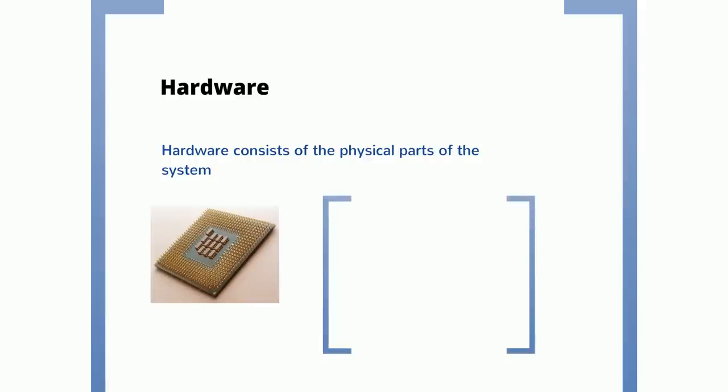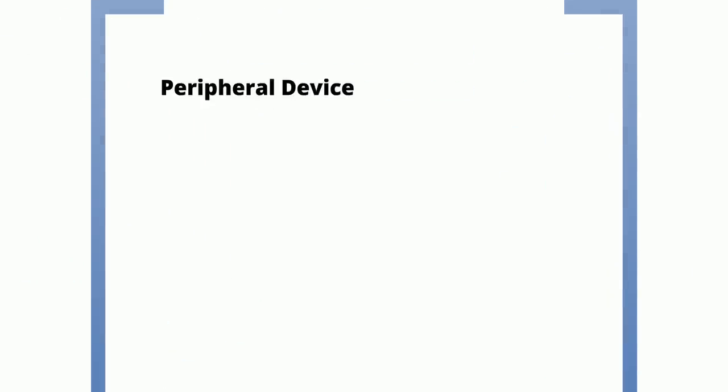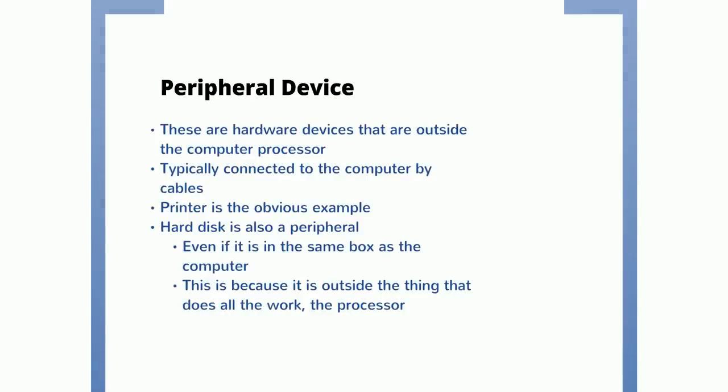Here's an example of a piece of hardware which is a chip inside. One example could be the processor. Another type of hardware, obviously, is peripheral devices. These are hardware devices that are outside the computer processor. They're typically connected to the computer by cables, but they don't just have to be connected by cables. A printer is the obvious example — it's outside the computer itself — but a hard disk is also a peripheral. Even if it is in the same box as the computer, it's still a peripheral because it's outside the thing that does all the work, and that's the processor.